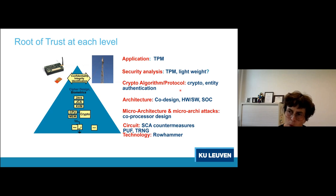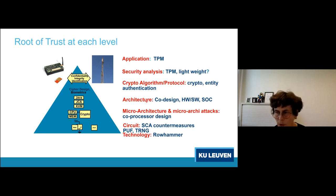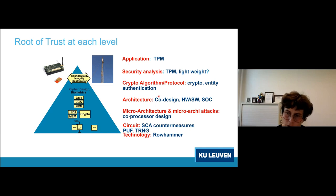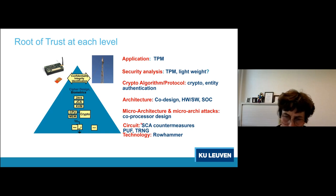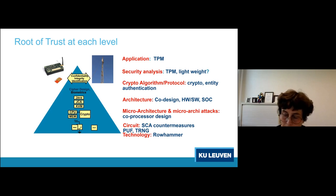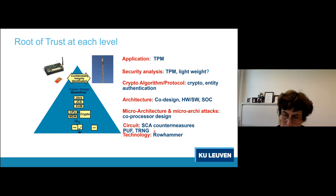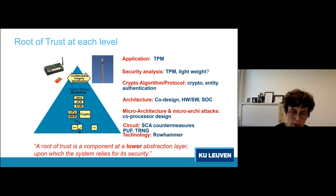The crypto itself relies on secure implementations — the root of trust for crypto is architecture, hardware, software, and system-on-chip design. That level relies on the micro-architecture; we don't want micro-architectural attacks, and co-processor design fits here. These levels rely on circuit-level countermeasures. Things like PUF technology and secure memories sit at the circuit level, and we can go down to the technology level — for example, avoiding Rowhammer, which is an attack at the DRAM technology level.